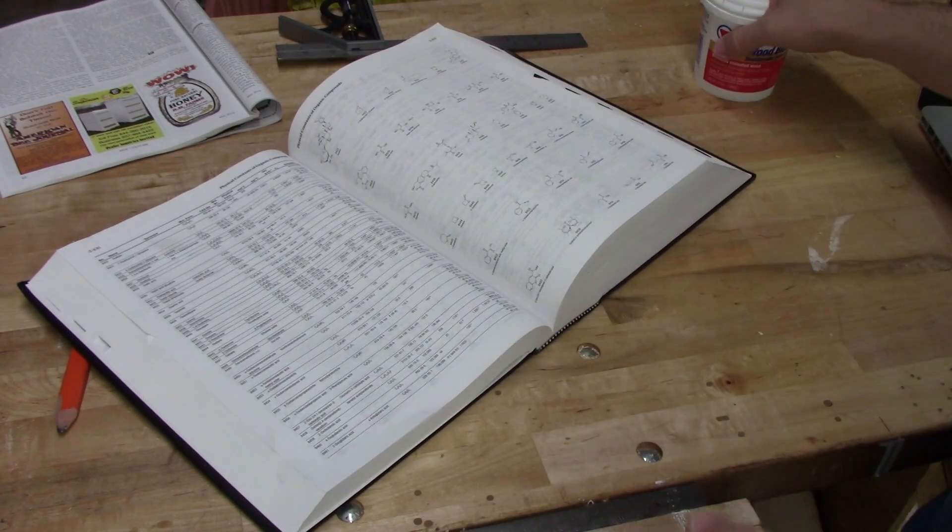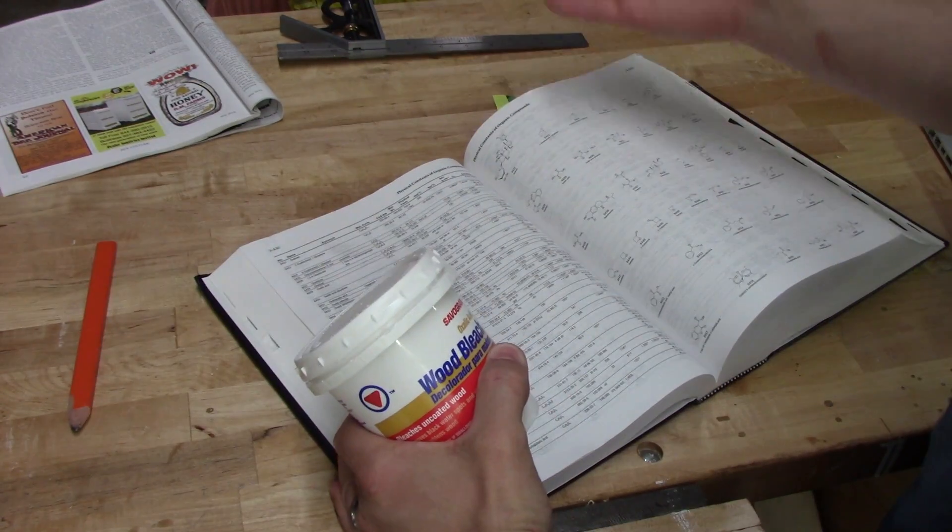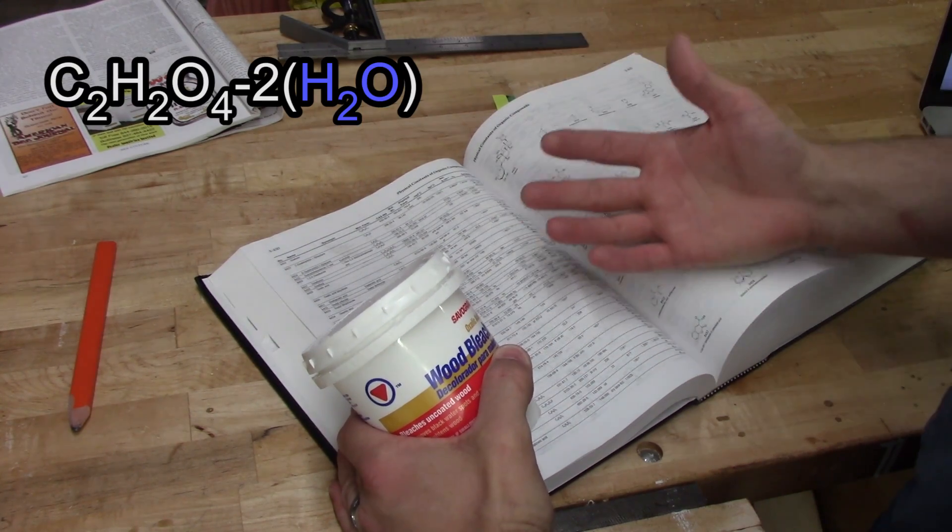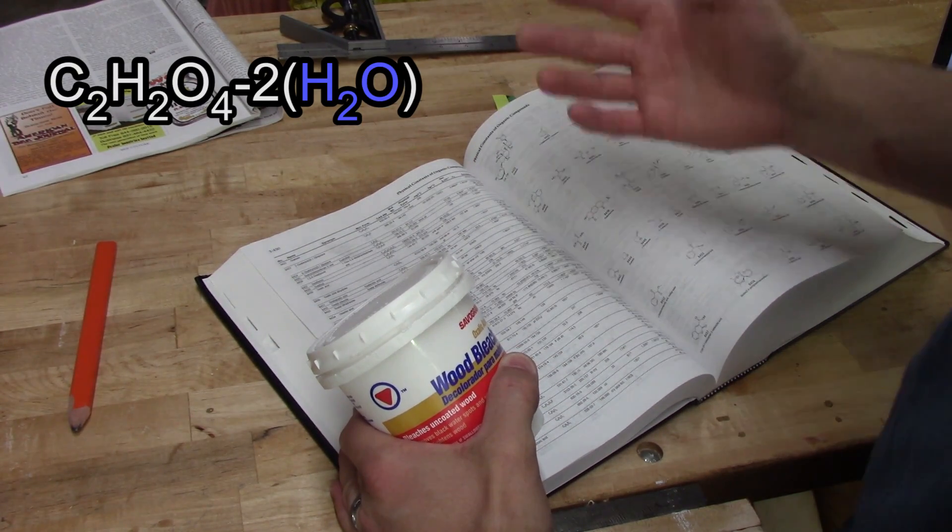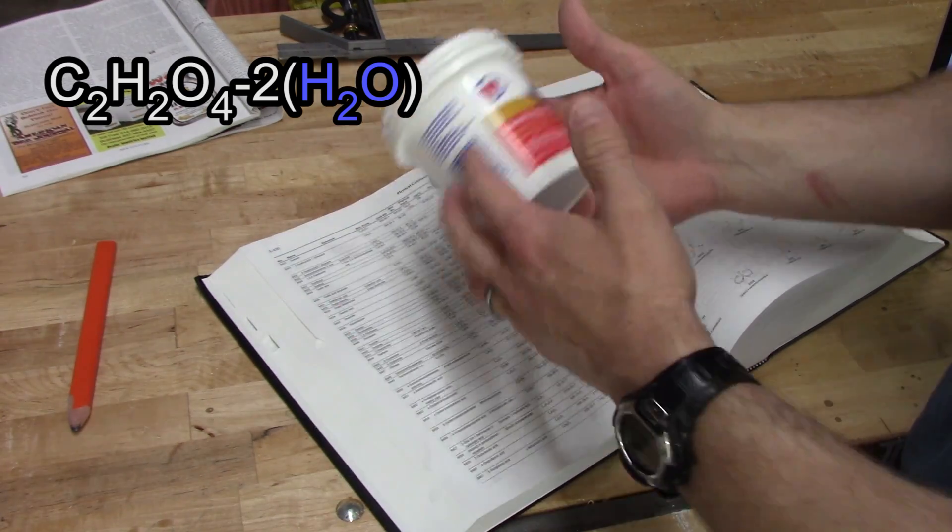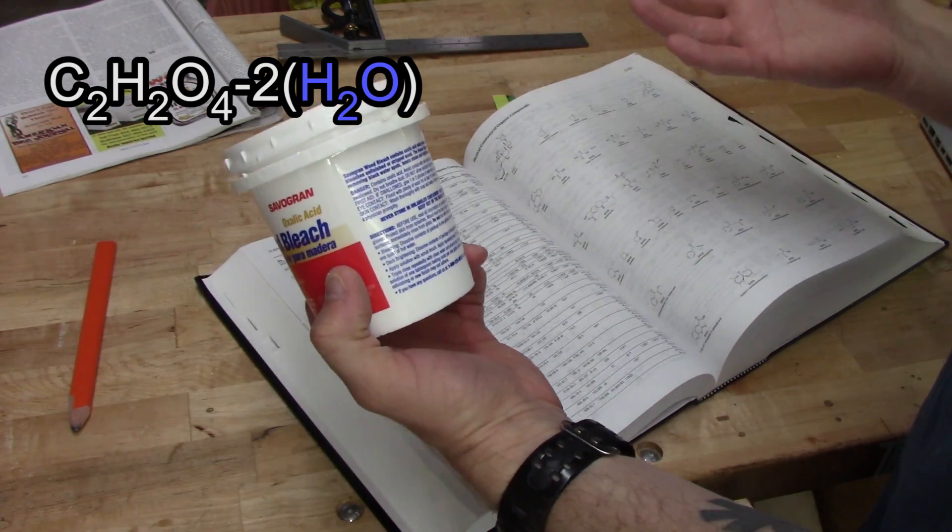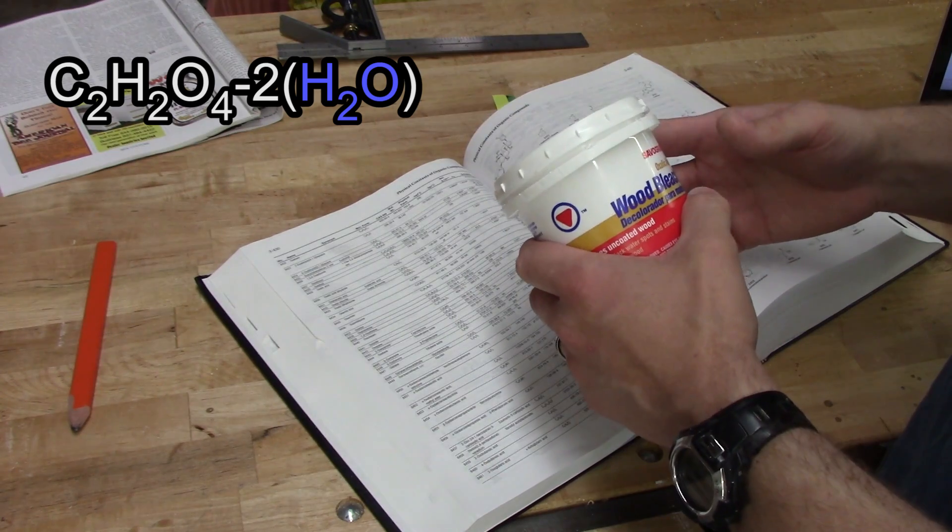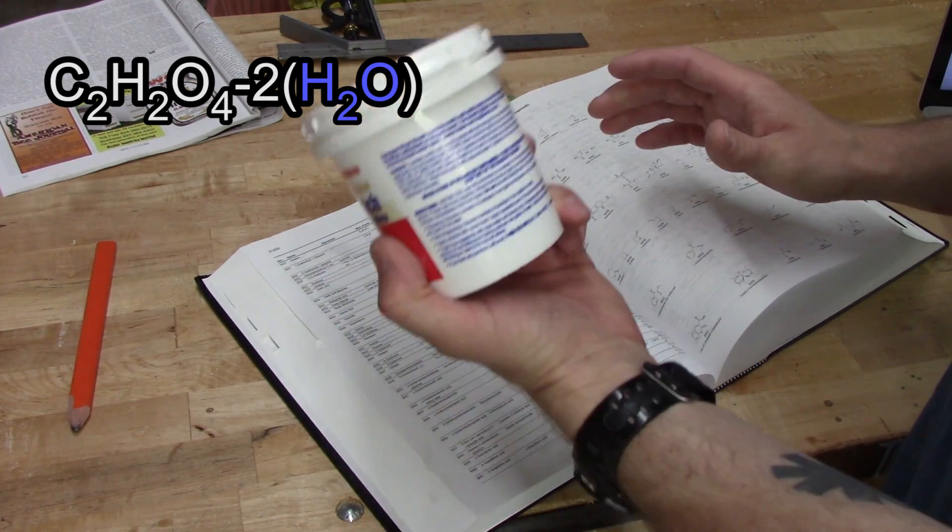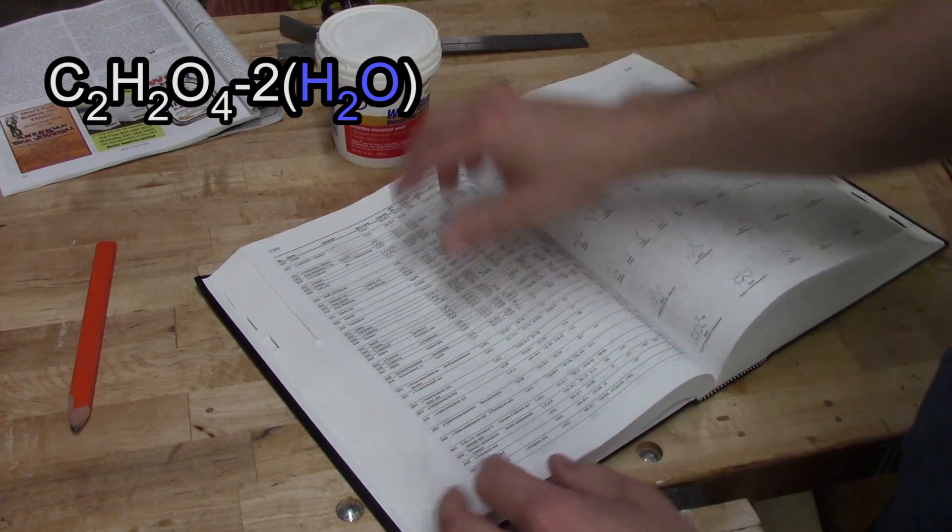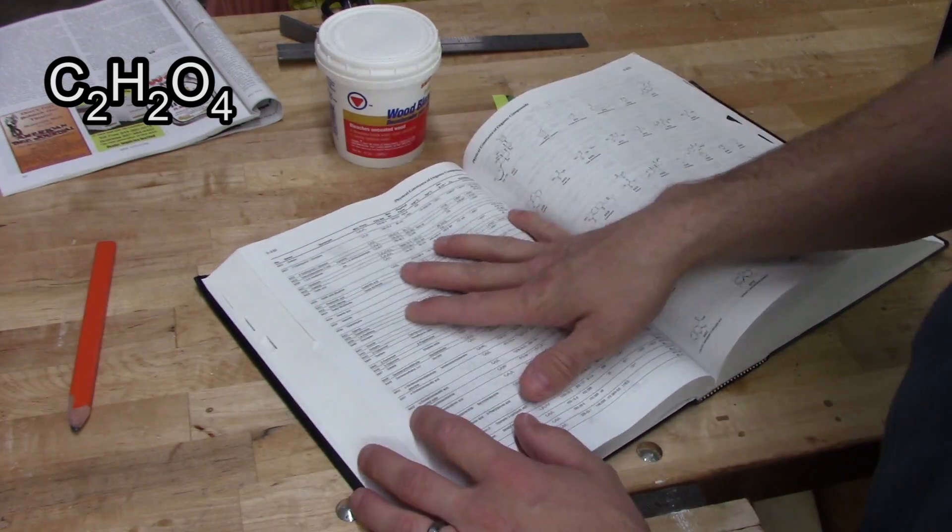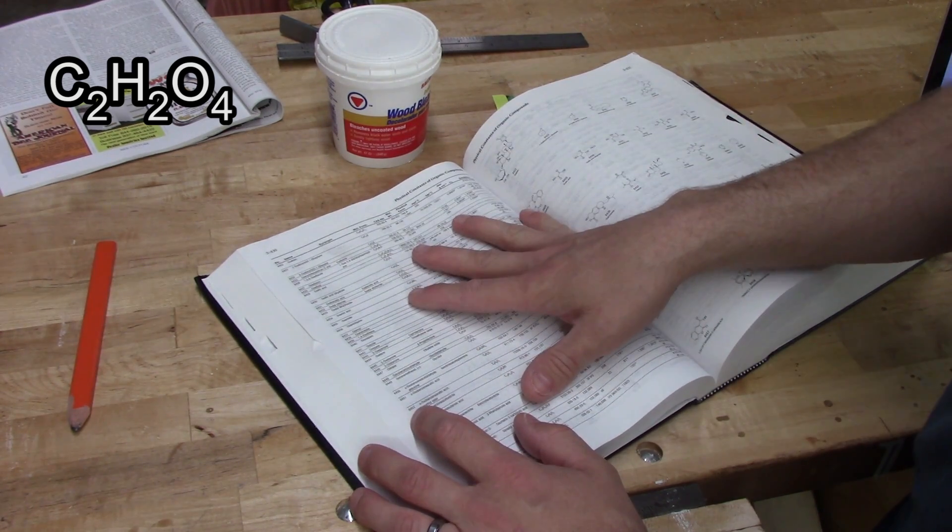So let's start off with this dihydrate business. Oxalic acid is a chemical. There's a lot of other chemicals that do it. It forms what's called a hydrate with water, meaning that some of the water molecules bond to the molecules of the oxalic acid even in solid form. So oxalic acid dihydrate is oxalic acid that has some water molecules attached to it. The regular oxalic acid is anhydrous or doesn't have any water in it.